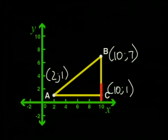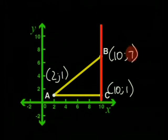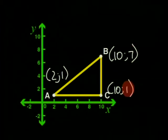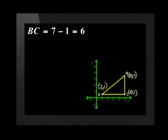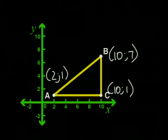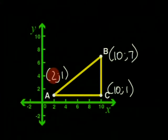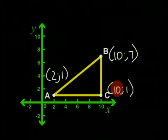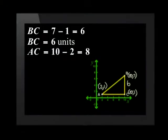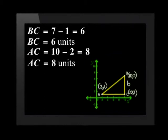BC lies on the line where the x value is 10 all the way. If you look at the y value of B, it is 7, and the y value of C is 1, and they lie under each other. 7 minus 1 is 6, which is the length of BC. We know that AC is 8 units long. The x value of A is 2 and the x value of C is 10. A and C lie on the line where y is 1 all the way. 10 minus 2 gives me 8, so AC is 8 units long.